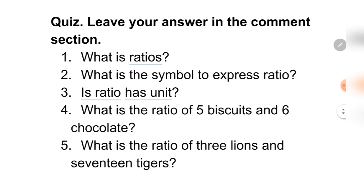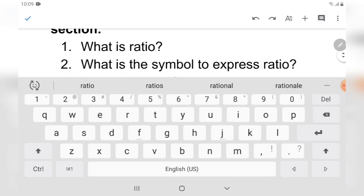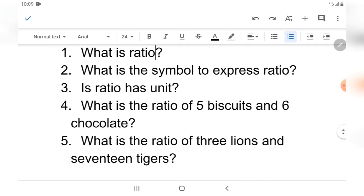Quiz: leave your answer in the comment section. Number one: what is ratio? Number two: what is the symbol to express ratio? Number three: does ratio have a unit, yes or no? Number four: what is the ratio of five biscuits and six chocolates? Number five: what is the ratio of three lions and seventeen tigers?